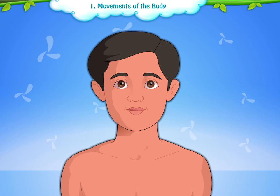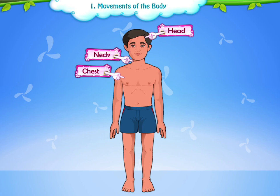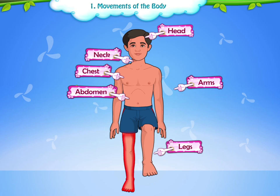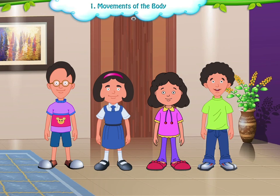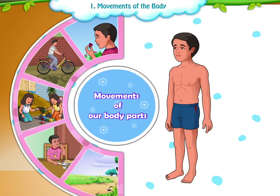The main parts of the body are head, neck, chest, abdomen, arms and legs. Though we all have the same parts of the body, we still look different. Now let us learn about the movements of our body parts.